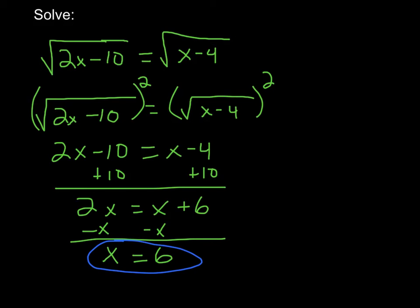In order to check to make sure it works, I can take this 6 and plug it right back in. 2 times 6 is 12 minus 10, that leaves me with the square root of 2 on the side. Over here I've got 6 minus 4, the square root of 2. So now I'm left with the square root of 2 equals the square root of 2, so it does indeed check out. That's our answer.